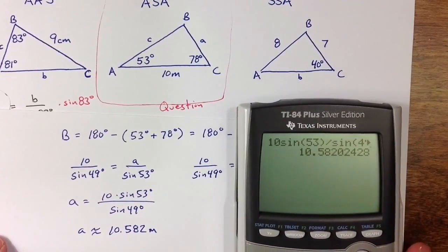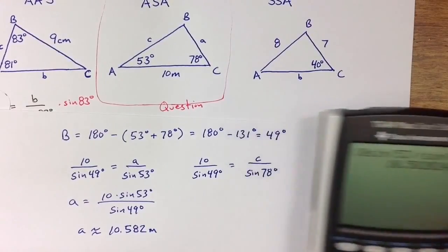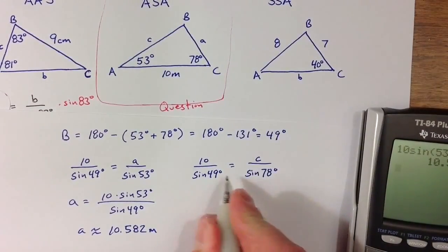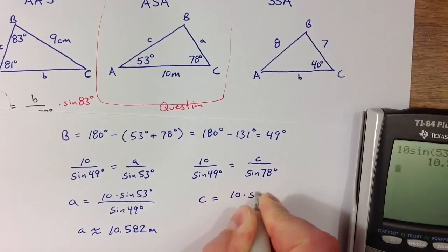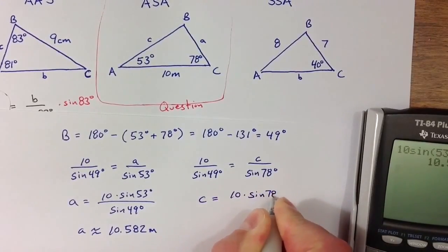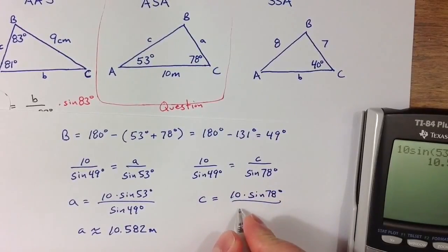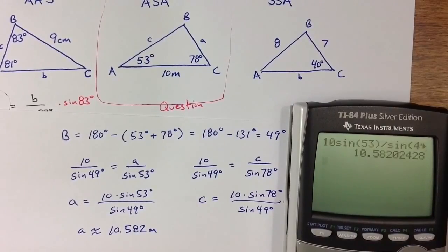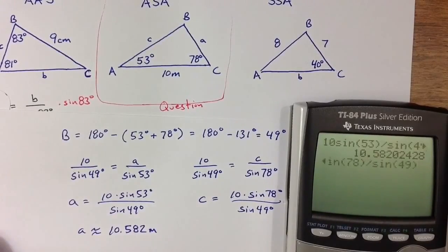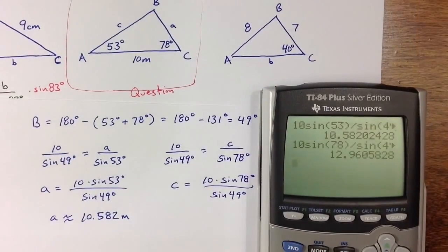In a similar way, we can find a value for C. I multiply sine of 78 to the other side, and I get C equals 10 times sine of 78 degrees divided by sine of 49 degrees. So 10 times sine of 78 degrees divided by sine of 49 degrees turns out to be about 12.961 meters.